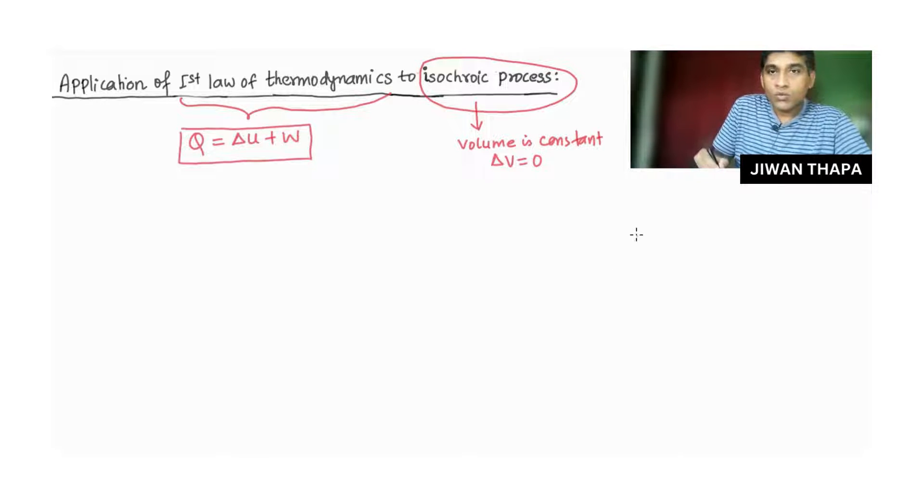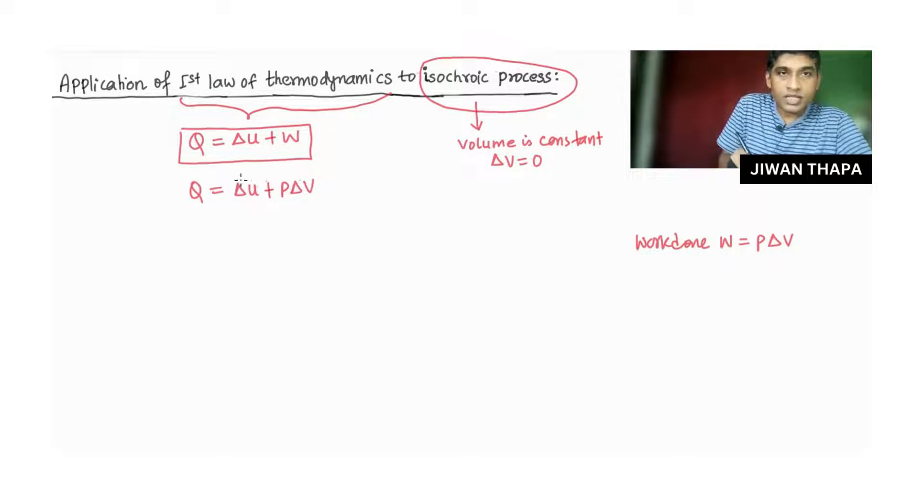We know work done W equals P times delta V, so this equation can be rewritten in this form: Q equals delta U plus P delta V.